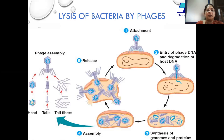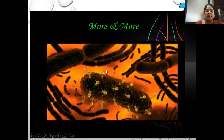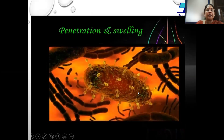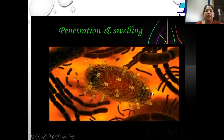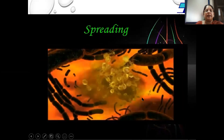This is the pictorial representation where we can see the attachment of the bacteriophage using a tail fiber onto the bacterial surface. Many phages attach to the surface of the bacterium, and the injection of DNA and synthesis of new bacteriophages inside the bacteria results in the swelling of the bacteria, which in turn burst the bacterial cells and the phages spread to neighboring bacteria.